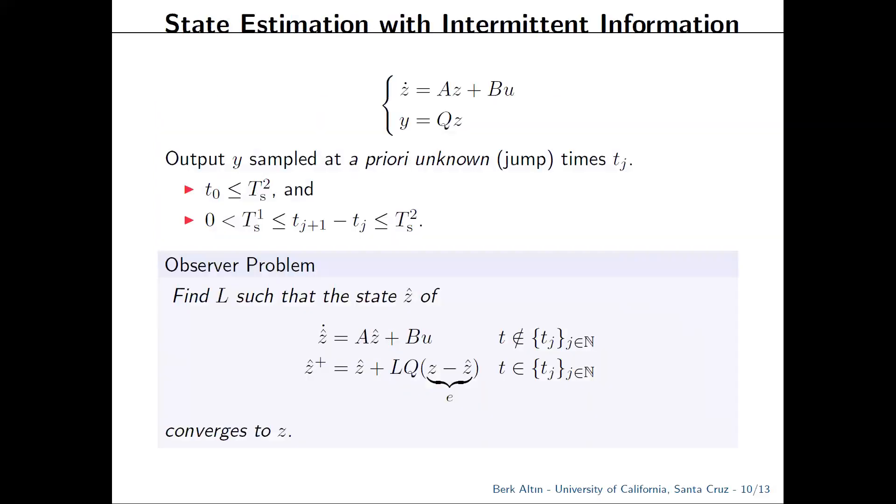In the rest of the talk, I want to focus on two applications. The first is a state estimator for linear systems which uses intermittent samples. We assume positive lower and upper bounds on the duration between consecutive transmissions, so sampling might possibly occur over an unreliable network. The observer problem is to design a gain matrix L such that the state of this impulsive observer converges to the plant state z.